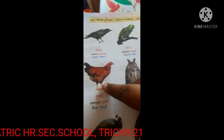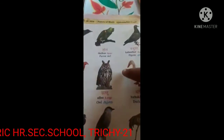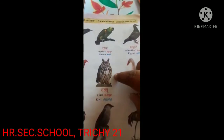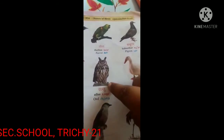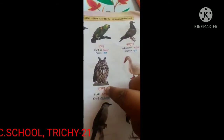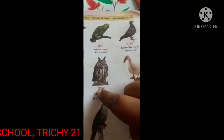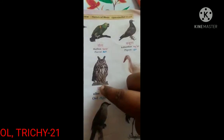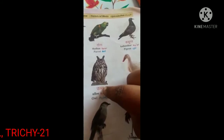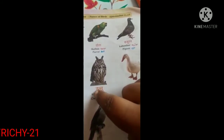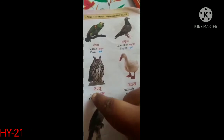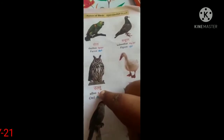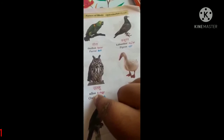Next one is owl. Owl we call in Hindi as ullu. U-L-L-U — 'u' the vowel, then the consonant 'l' is used twice: one is half 'la' and the second one is full 'la'. The symbol of 'u' is used, that's why we pronounce it as ullu.